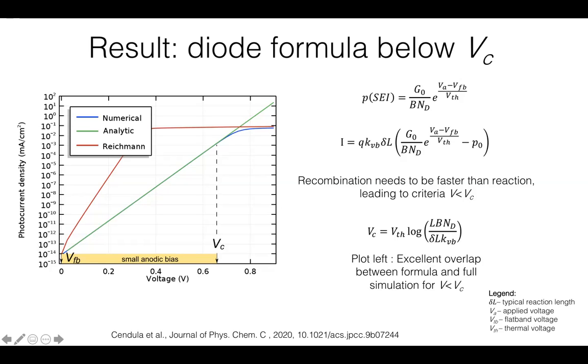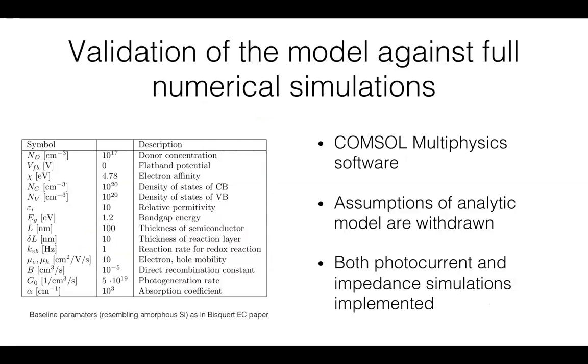which is shown in blue. We see good overlap of our analytical model, green with the blue in the small anodic bias range.